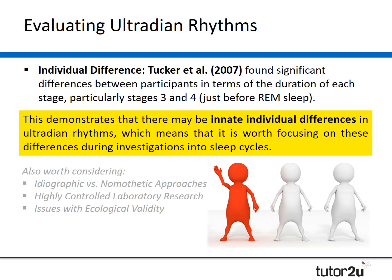It's worth considering idiographic versus nomothetic approaches and the nature of the research, which is often highly controlled, raising issues around ecological validity. Many argue that the way such research is conducted may tell us little about ultradian rhythms in humans. For example, when investigating sleep patterns, participants are often subject to high levels of control — attached to monitors measuring their rhythms, which may be invasive — leading them to sleep in a way that doesn't represent their ordinary sleep cycle, thereby lacking ecological validity and potentially leading to false conclusions.